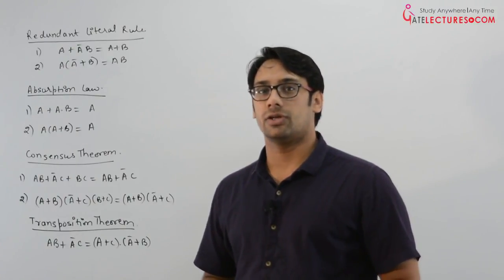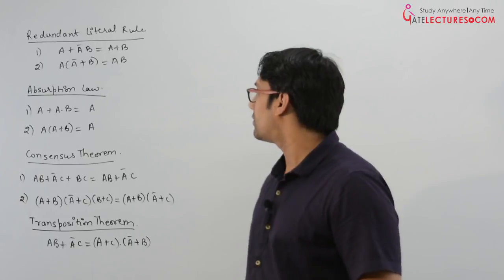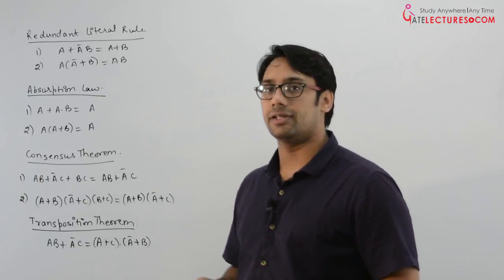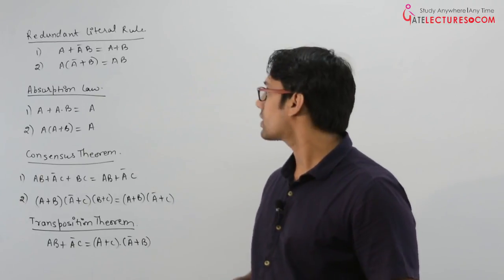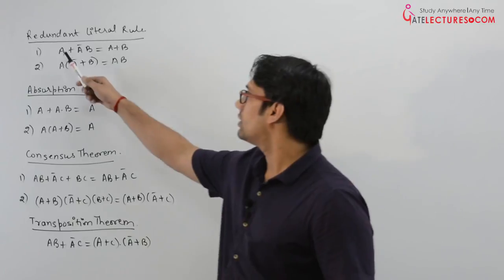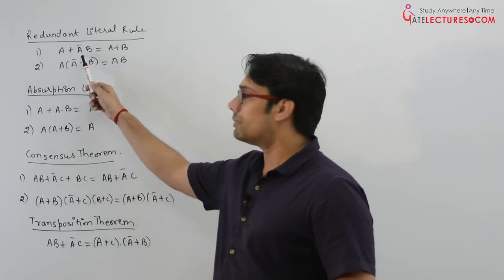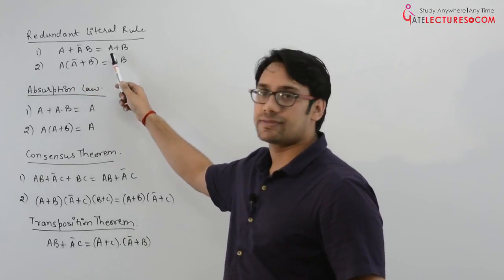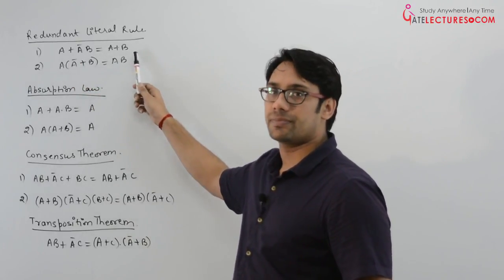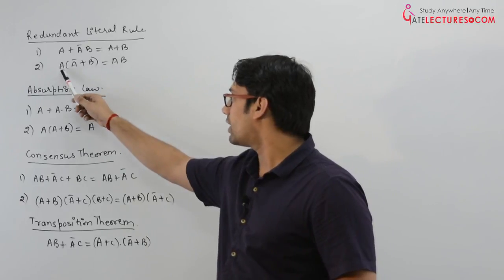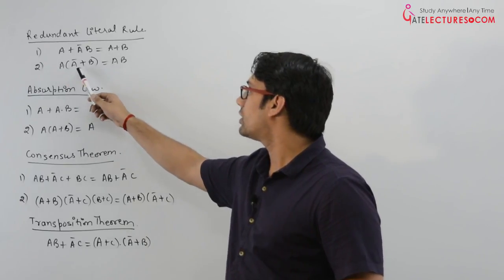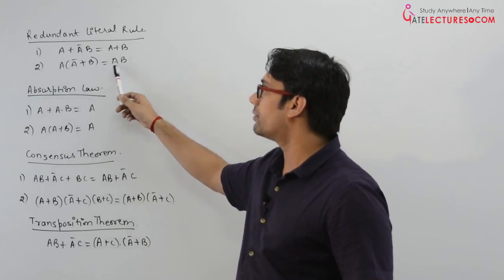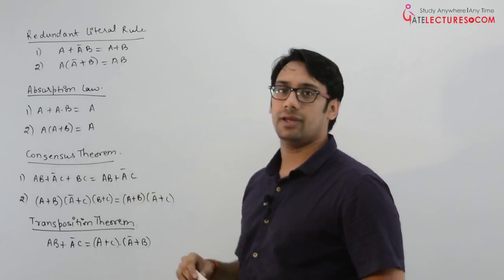Let us look at the following theorems. The first one is the redundant literal rule. It says if we have A plus A complement B, it can be written as A plus B. And if we have A dot A complement plus B, it can be written as AB.